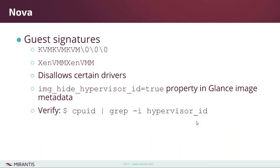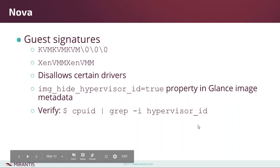Another useful change in Pike is the ability to control whether or not you see hypervisor signatures. Certain hypervisors have certain signatures — for example KVM and Xen — but this can cause problems because some drivers don't want to run on those particular hypervisors. To get around that you can hide the signature using the Glance metadata for the image you're using, but keep in mind that's not necessarily going to solve your problem in every case, because some restrictions are there for good reasons.